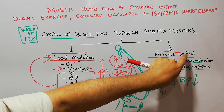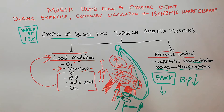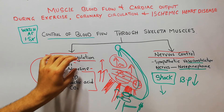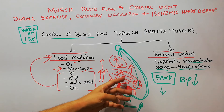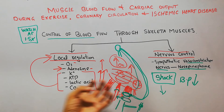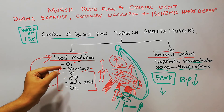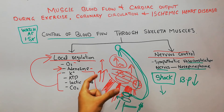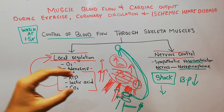So the two main control mechanisms for blood flow through skeletal muscles are: first, local regulation, which is active at the level of muscles and most active during exercise when the demand for oxygen and other nutrients increases. Local factors — including oxygen deficiency, increased adenosine, potassium, ATP, lactic acid, and carbon dioxide — lead to vasodilation, increasing the width of the blood vessels so that more blood is supplied to fulfill the muscle's demands.